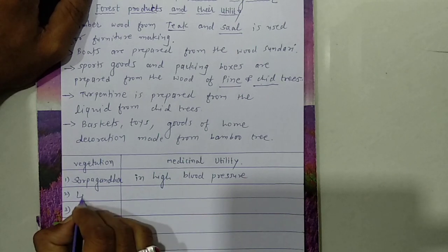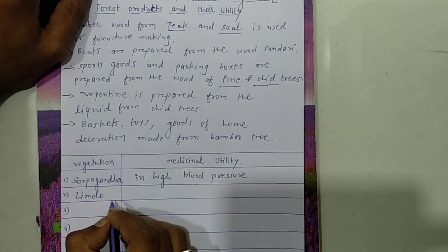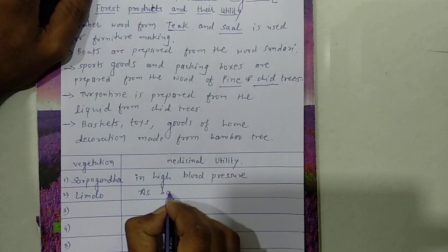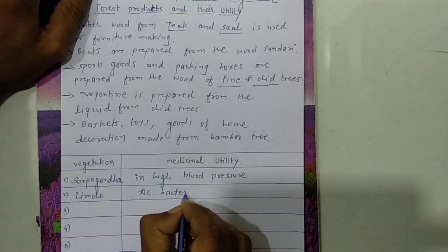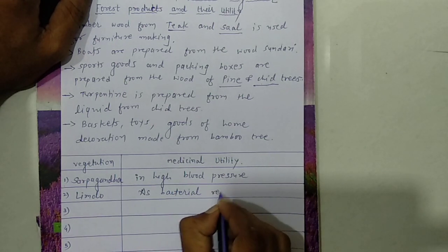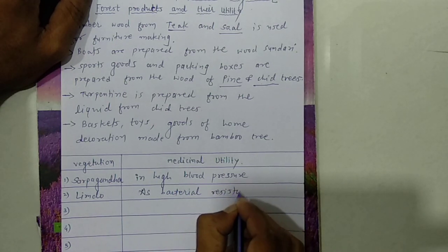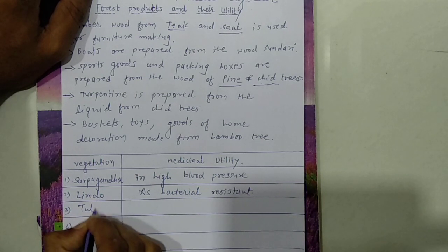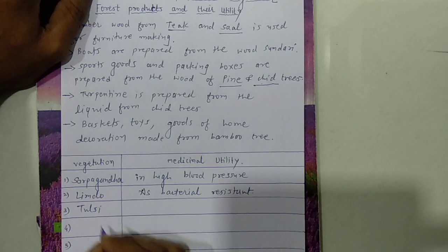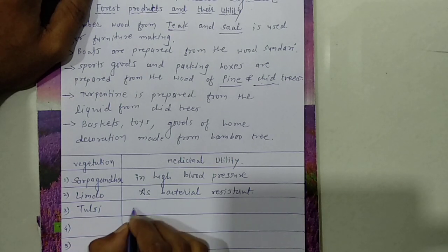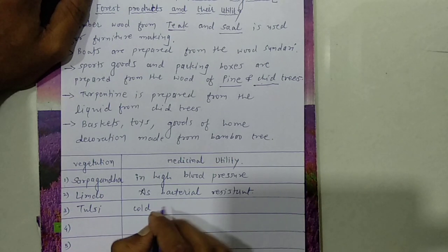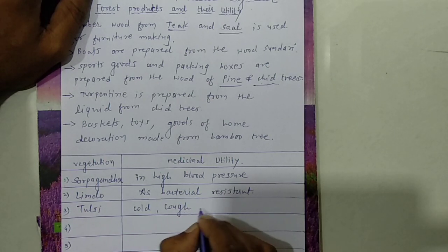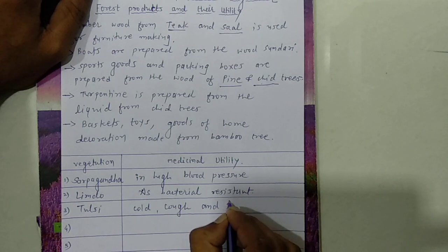The next one is limbo, which is very popular in our areas. It is used as a bacterial resistant. The third one is tulsi, which is also commonly found in our homes. Tulsi is used for cold, cough, and fever.